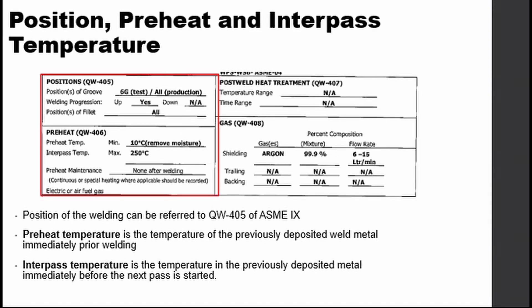Weld positions are indicated in ASME Section IX QW-405. If the position indicated in the WPS is qualified for all positions, as shown here in the sample, then the production weld can also be welded in all positions.